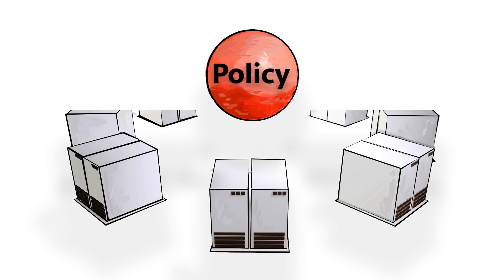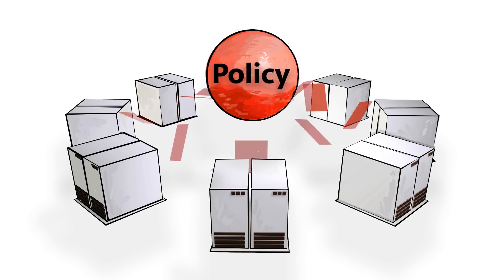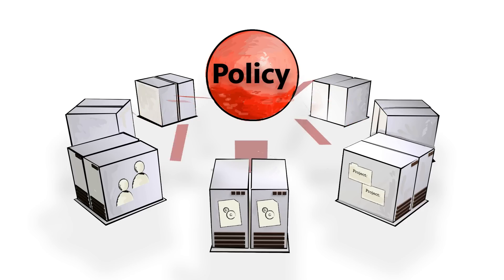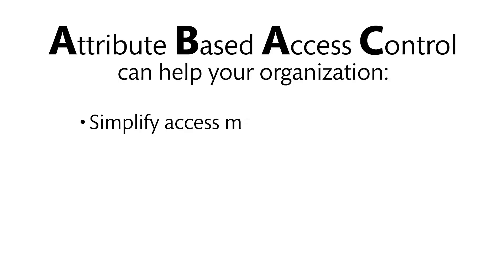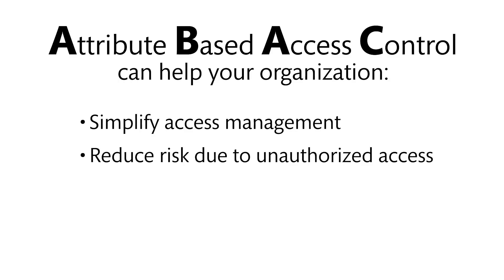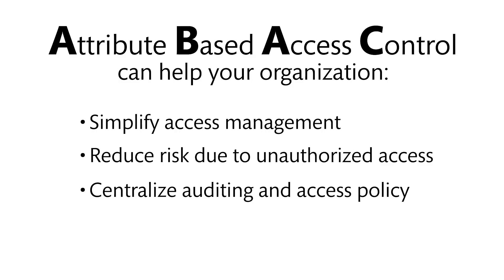The ability to centrally establish and audit access policies across applications, projects, and users is core to an ABAC system. Reducing the complexity of an access control system makes it easier to meet the requirements of strict financial data segregation. By using attribute-based access control, organizations can simplify access management, reduce risk due to unauthorized access, and centralize auditing and access policy management.